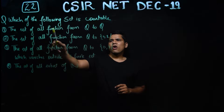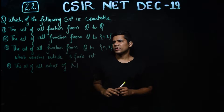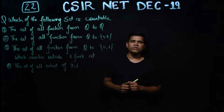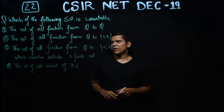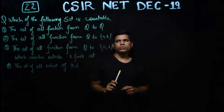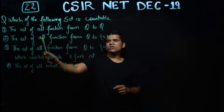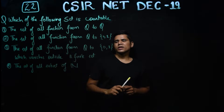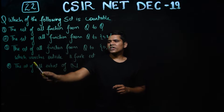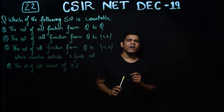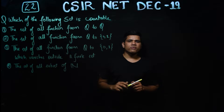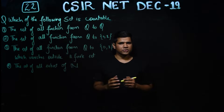It says: which of the following sets is countable? You have four options — four sets for which you have to determine the countability. Your first set is the set of all functions from Q to Q. Your second set is the set of all functions from Q to {0,1}. Your third set is the set of all functions from Q to {0,1} which vanishes outside a finite set, and your fourth option is the set of all subsets of N.